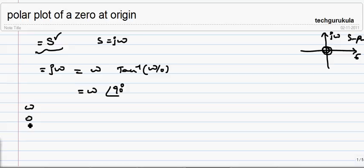Now, if we change omega from 0 to infinity and take values of M, M is omega and phi is plus 90 degrees, which is independent of omega in this case. M is going to be 0 and phi is 90 degrees.